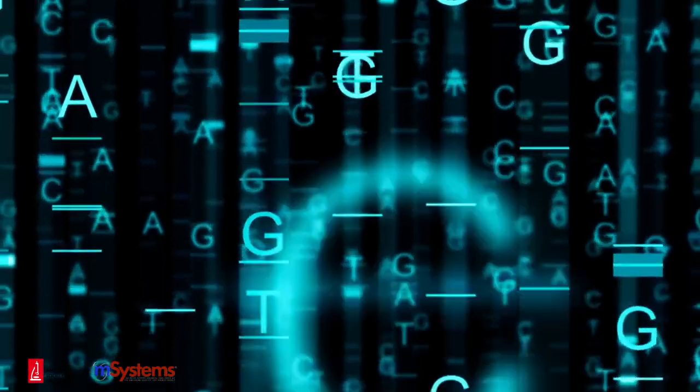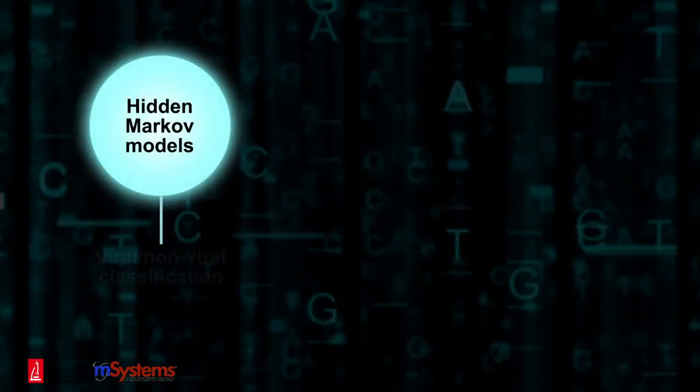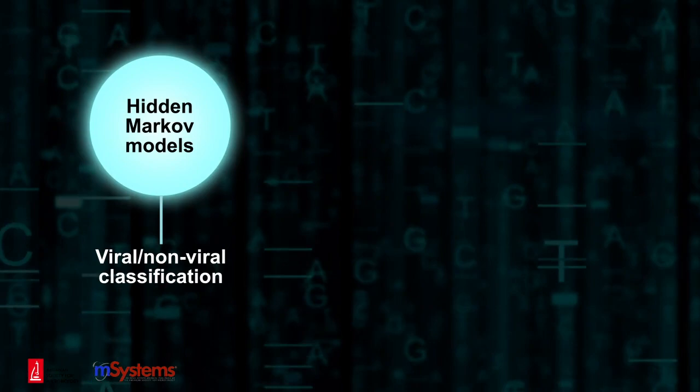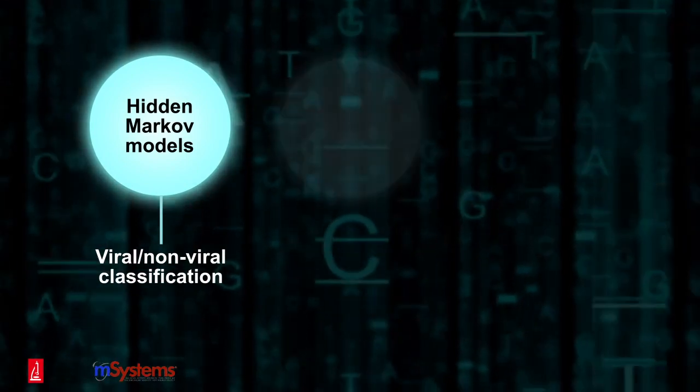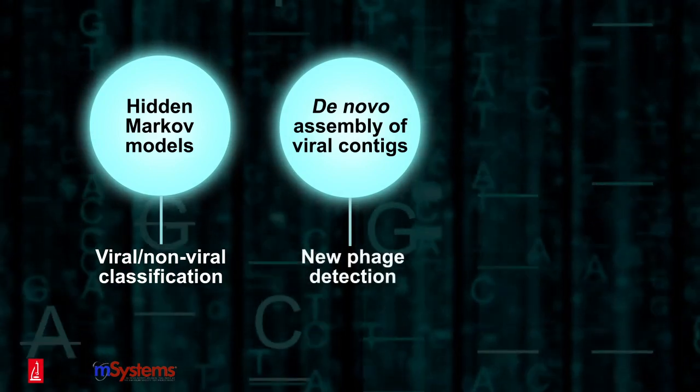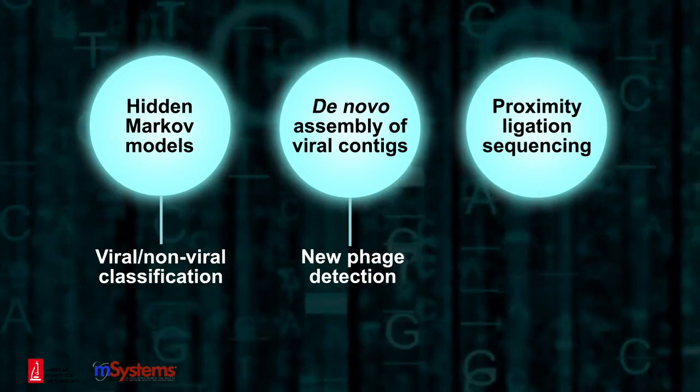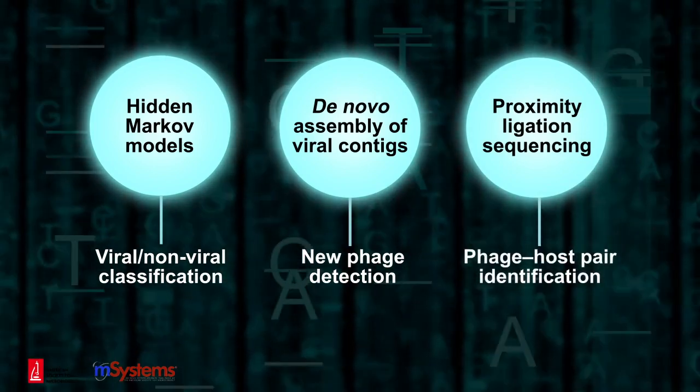Alternatives to mapping reads to reference databases include hidden Markov models to classify sequences as viral or non-viral, de novo assembly of viral contigs to detect previously undescribed phage lineages, and proximity ligation sequencing to identify phage host pairs.